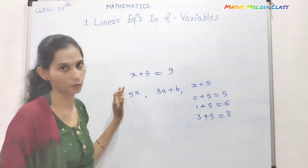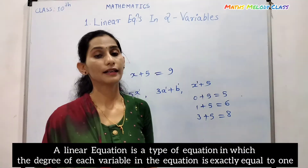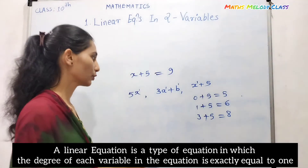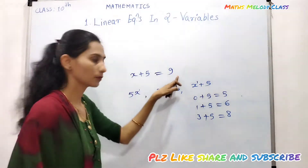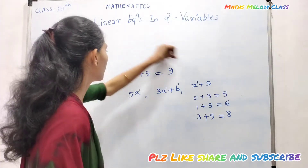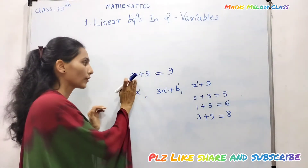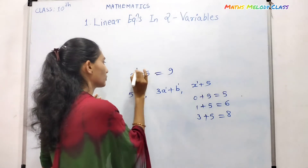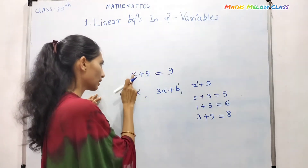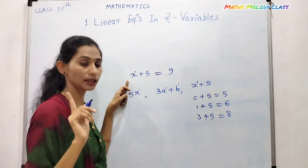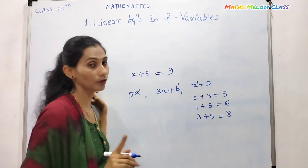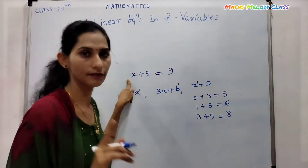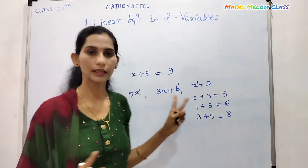Let's talk about what is the meaning of a linear equation. A linear equation is a type of equation in which the degree of each variable in the equation is exactly equal to one. We call it a linear equation because the power — the degree — of the variable present is one. If there is one variable present, we call it a linear equation in one variable; if two variables are present, we call it a linear equation in two variables.